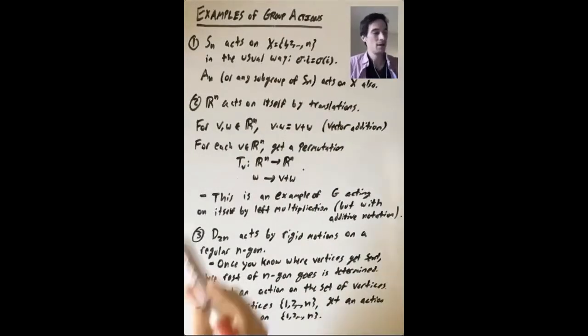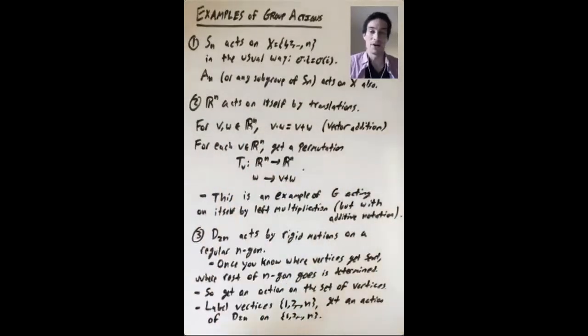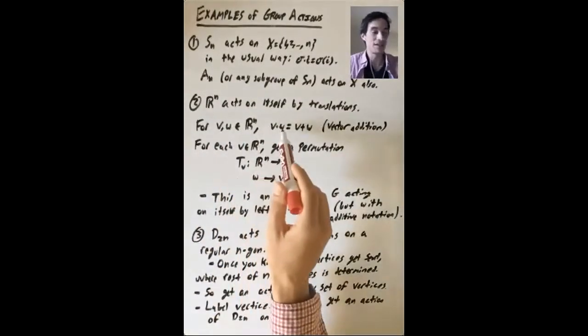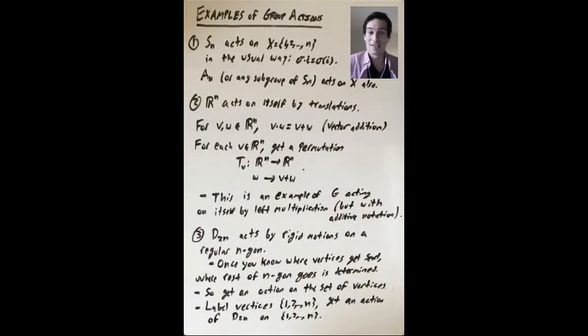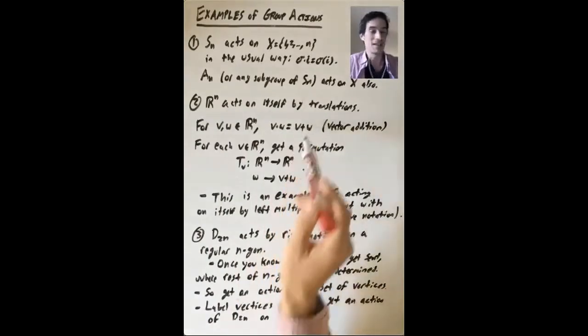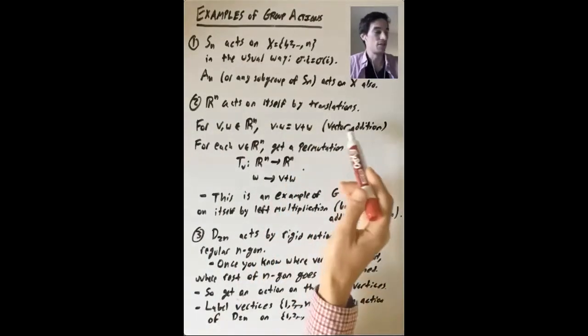Another example. Rn, which you can think of as a group under vector addition, acts on itself by translations. So what does that mean? Take two vectors v and w in Rn. How does v act on w? It sends it to the sum. So this is vector addition.